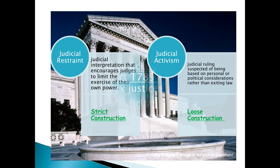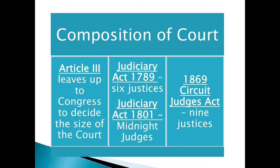In the composition of the court, Article 3 creates the judicial branch. Remember, Article 1 is the legislative branch, Article 2 is the executive branch, and here we're talking about Article 3 and the judicial branch. In Article 3, it left it up to Congress to decide what the size of the court would actually be.